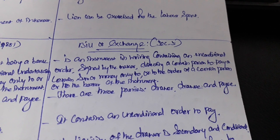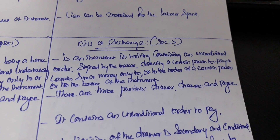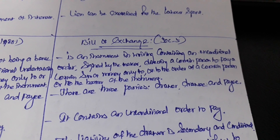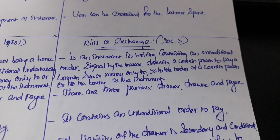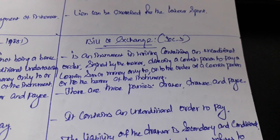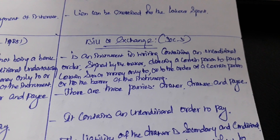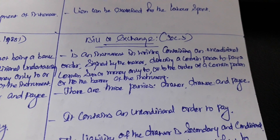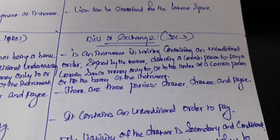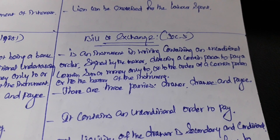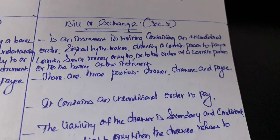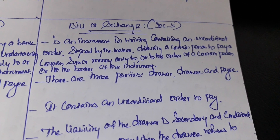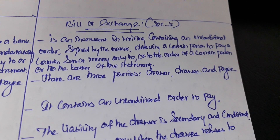Bill of Exchange under Section 5 of the Negotiable Instruments Act 1881 is an instrument in writing containing an unconditional order signed by the maker directing a certain person to pay a certain sum of money only to, or to the order of, a certain person, or to the bearer of the instrument. There are three parties: drawer who makes the bill of exchange, drawee who accepts the bill of exchange, and payee who receives the payment.